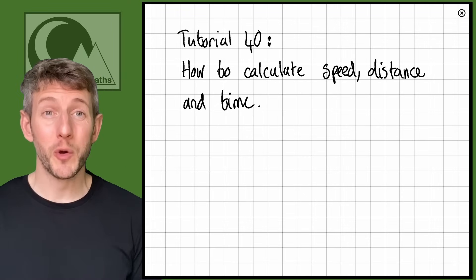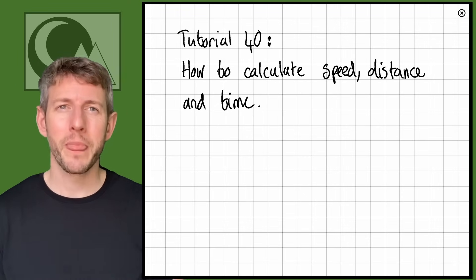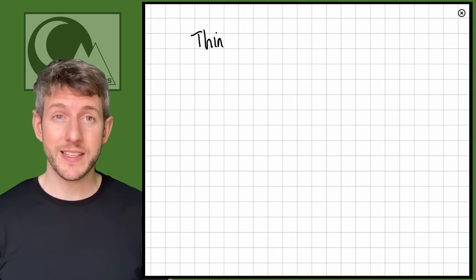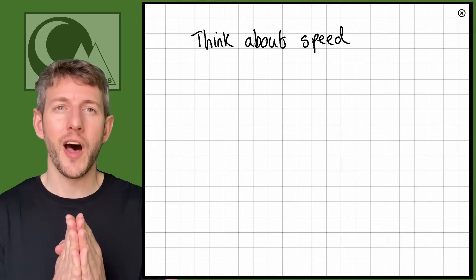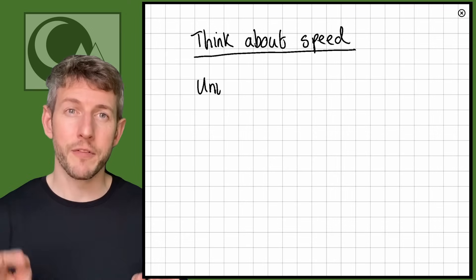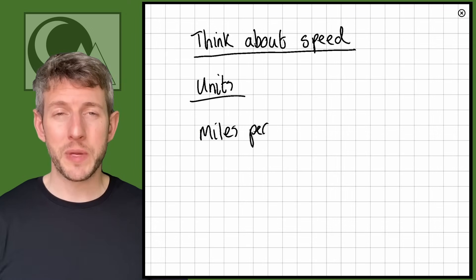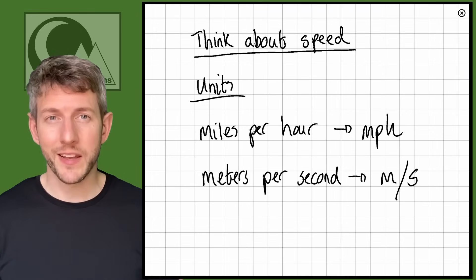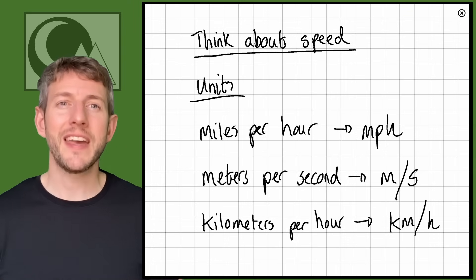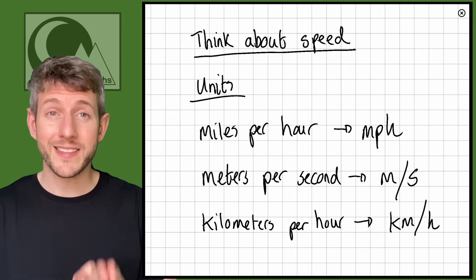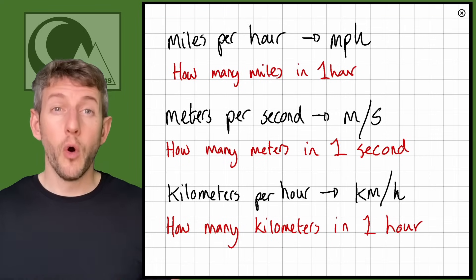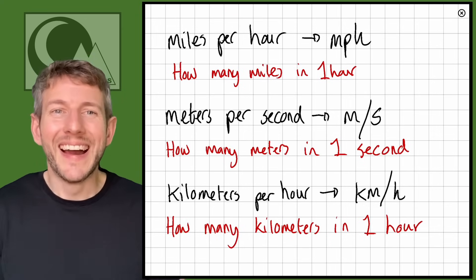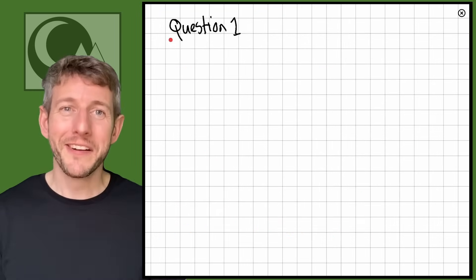Hi everyone, it's Ian here and welcome to tutorial 40 on how to calculate speed, distance, and time. Speed is the key focus in speed-distance-time because the speeds give us our information. You need to think about the units of speed: miles per hour, meters per second, kilometers per hour. These are the key to mastering speed-distance-time questions — if you understand what each means, you can work out your answers.